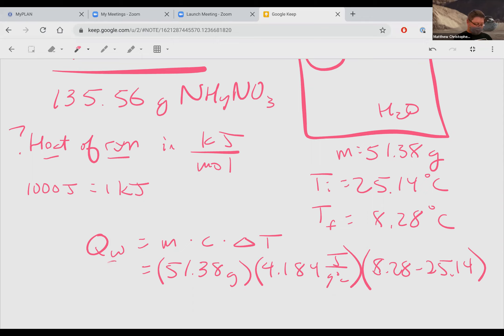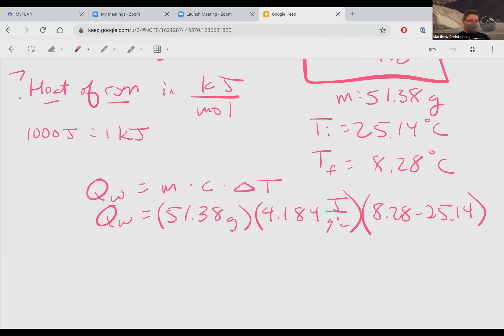This equals the heat from the water's point of view. The next step that I would do is I would calculate this value. You'll notice I completely ignored how much chemical was added because the chemical is not the water. So we only want the water for this Q.